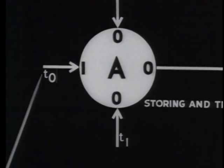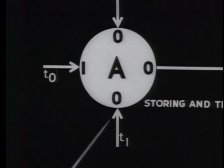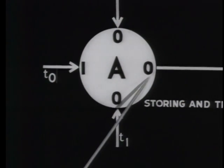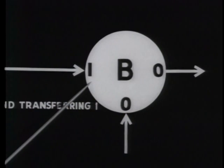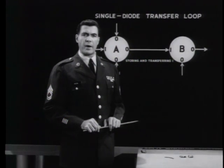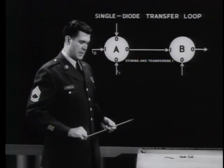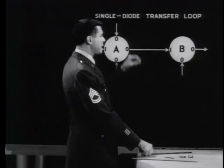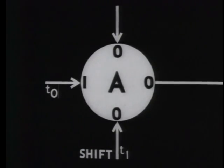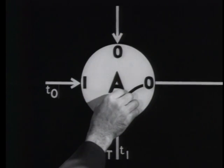The input on the left will set the core to binary one. The top and bottom inputs will clear it back to zero, and whenever the core is cleared to zero, an output occurs, switching core B to one. But this means that either one of the dot inputs can bring about a transfer of the bit from A to B — the bottom one or the top. Tighter control is frequently necessary. We may want the shift to occur only when the bottom pulse is applied — that is, we want the transfer of information to be conditional.